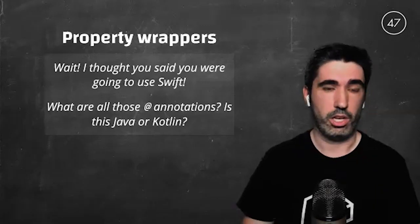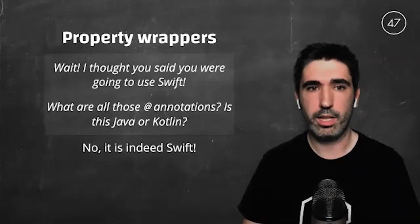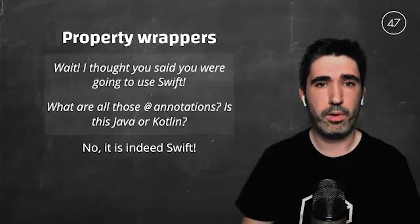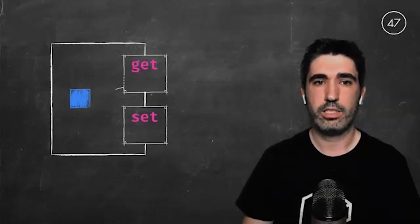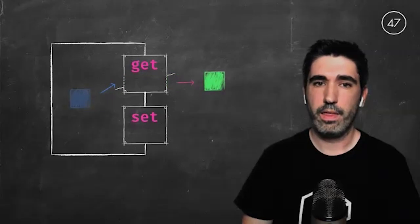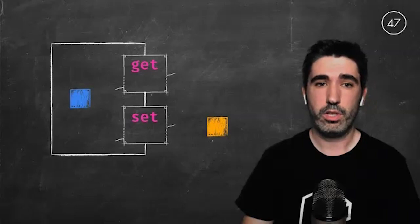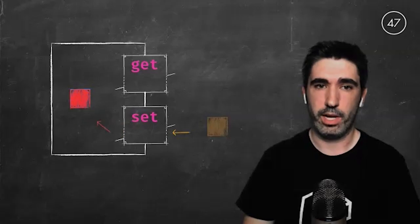I had to say no, this is indeed Swift. It is a new feature introduced approximately one year ago called property wrappers. A property wrapper is a language construction that lets us wrap a value — represented as a blue square — and it has two observers: get and set. We can perform actions whenever the value is retrieved or whenever we want to update the wrapped value.